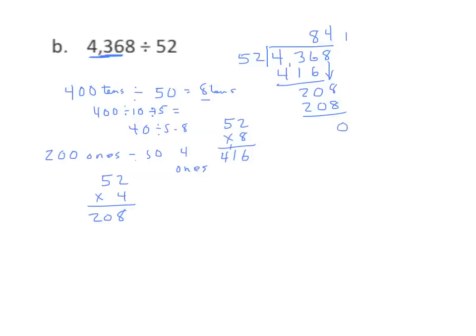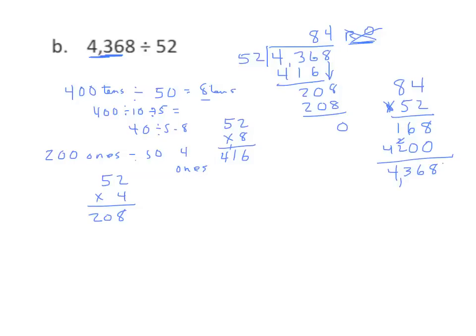We'll subtract and we get a remainder of 0. I don't have to put the 0 — some kids do, and it's not wrong, but it's not standard. Now we're going to check our work by multiplying our quotient times our divisor. 2 times 4 is 8, and 2 times 8 is 16. Put a 0 in my ones place because I'm multiplying from the tens. 5 times 4 is 20, regroup my 2. 5 times 8 is 40, plus 2 is 42. We'll find the sum of the partial products, and we see once again we have a match.